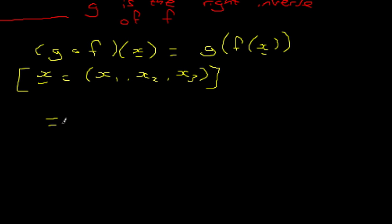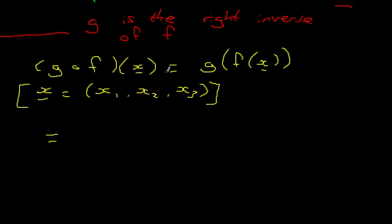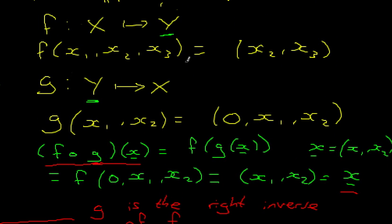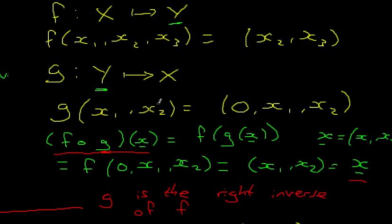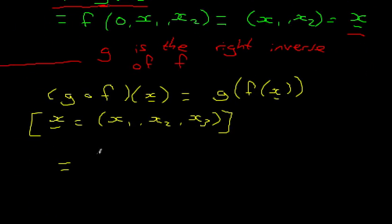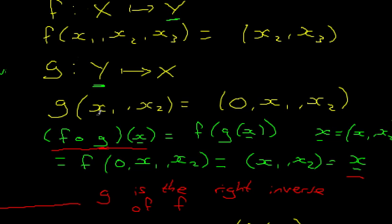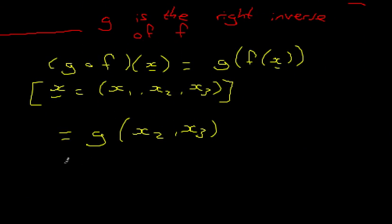So this is equal to, well, what's f of x? f of x1, x2, x3 is x2, x3, so it's the second and the third component. So this is equal to g of x2, x3. Now, what's g of x2, x3? Well, that's going to be 0, x2, x3, from the definition. 0, x2, x3.